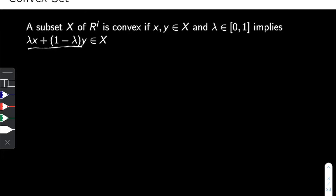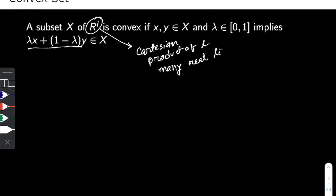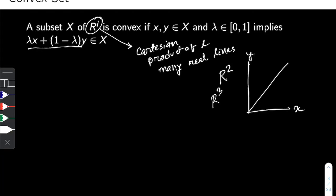Here RL refers to the Cartesian product of L many real lines. So if we are working with a two-good case then we are working in R2 space. If we have two goods like X and Y we can represent them in that space. If we are doing an optimization with three goods then we have an R3 case, and we can plot them in a three-dimensional graph. So L represents the number of dimensions we are working with in our mathematical problem.